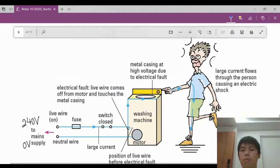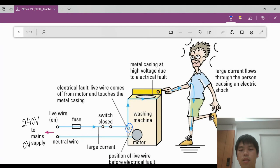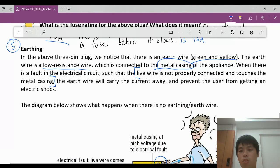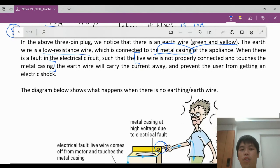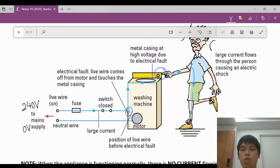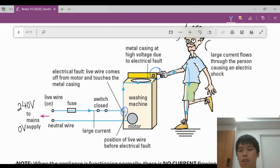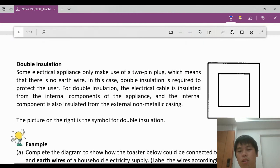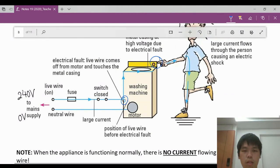So we look at the diagram here. Live wire touches the metal casing. This person touched the metal casing. He can get an electrical shock. So in the event this happens, what will happen is the earth wire will carry the current away and prevent the users from getting an electric shock. So this is one where there is no earth wire. Now let's take a look at the one where the earth wire is there.